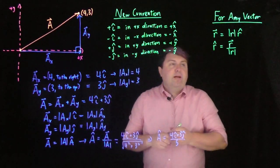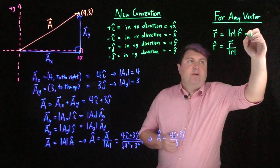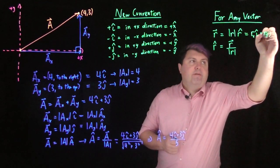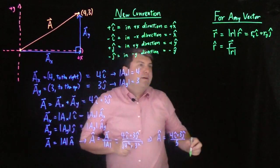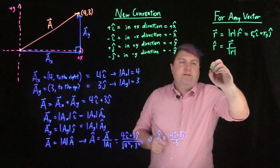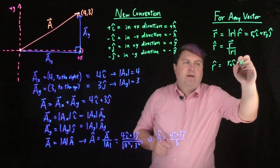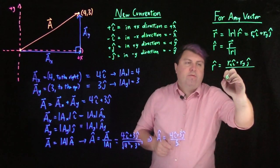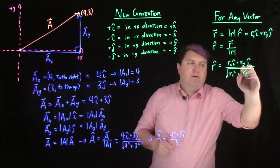So, in fact, for any vector, my r-vector I can just write as the r in the x-direction times i-hat, plus r in the y-direction times j-hat, exactly like this ax plus ay. And so then my r-hat, I can write as rx i-hat plus ry j-hat over the magnitude of r, which is the square root of rx-squared plus ry-squared.